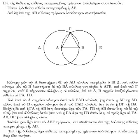Many Greek and Arabic texts on mathematics were translated into Latin from the 12th century onward, leading to further development of mathematics in medieval Europe. From ancient times through the Middle Ages, periods of mathematical discovery were often followed by centuries of stagnation.